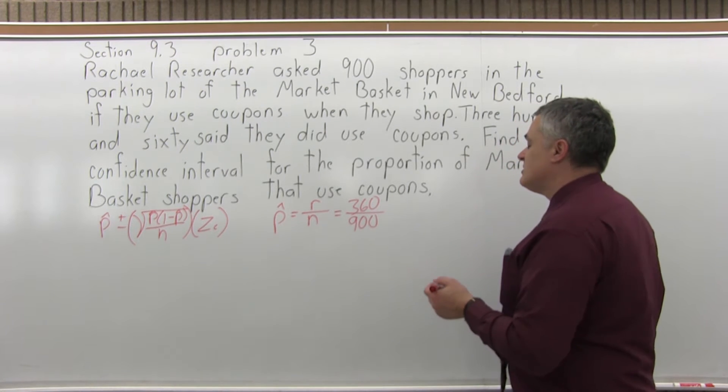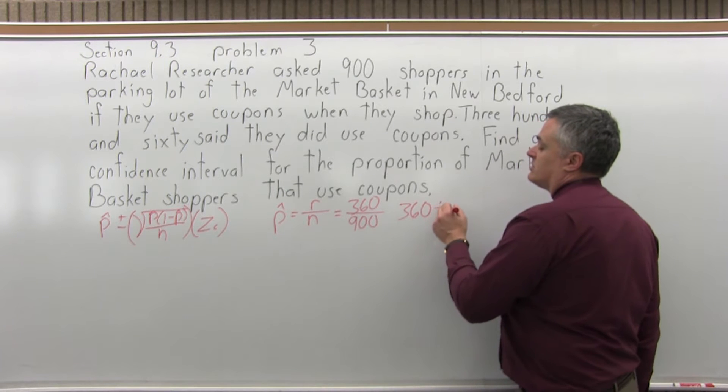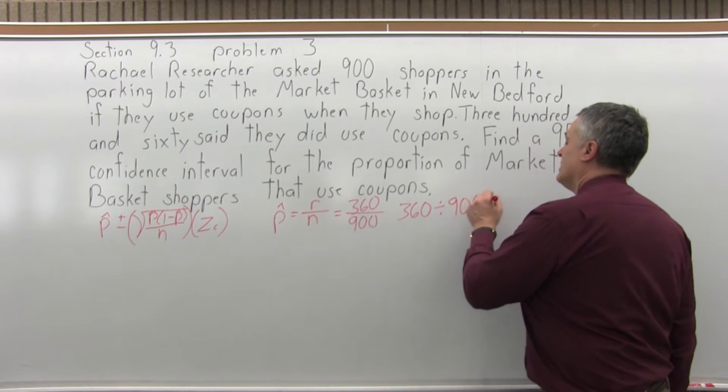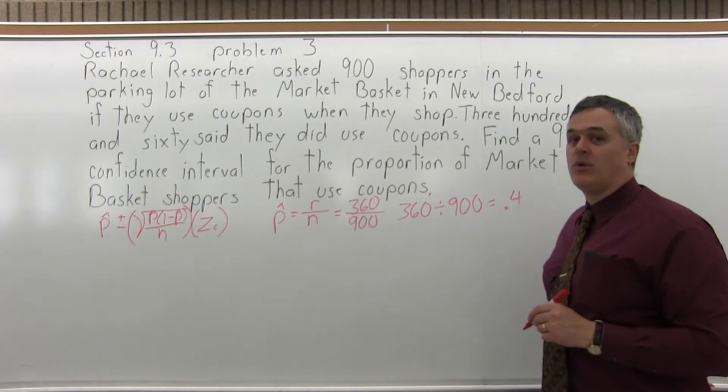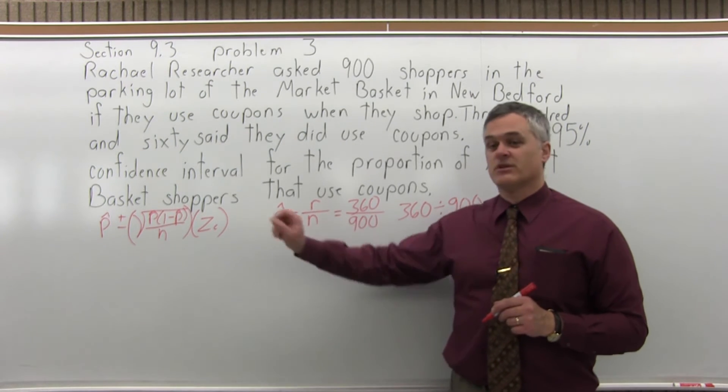...that r number of successful results is 360 over the total number of trials, 900. You're probably not going to be able to do it comfortably without your calculator. So just do 360 divided by 900 equals, and it comes out to a pretty reasonable 0.4. So that's our p hat that we're going to plug into the formula.